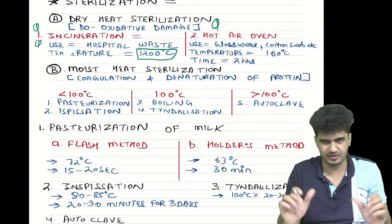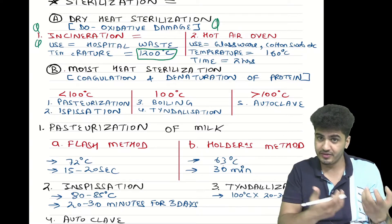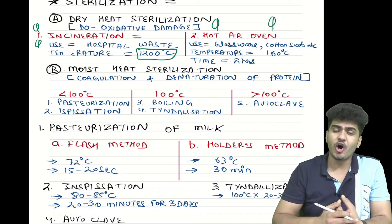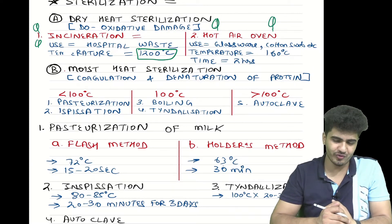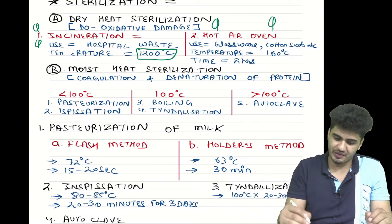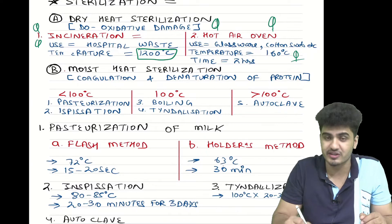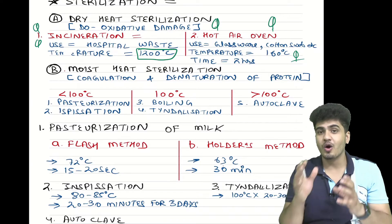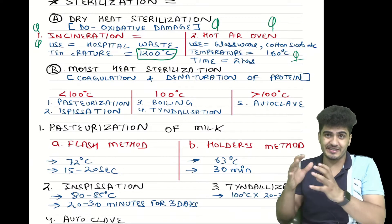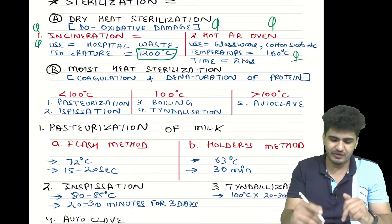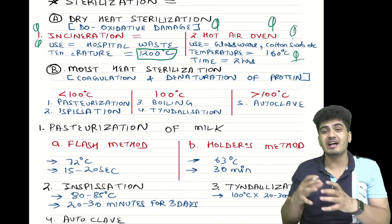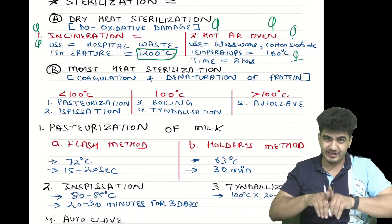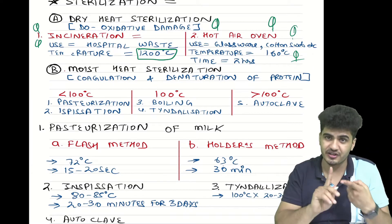The second dry heat method is the hot air oven. Remember, the temperature is 160 degrees Celsius and the timing is two hours — 160 degrees for two hours. It is used for glassware or cotton swabs. So for dry heat sterilization, we have studied two methods: incineration and hot air oven.